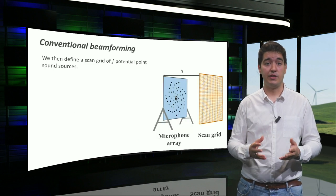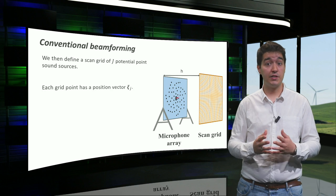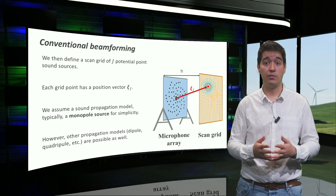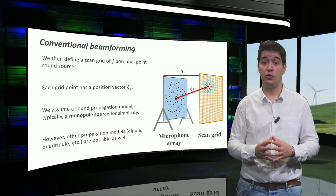We then define a scan grid of potential sound sources. Each grid point has a position vector, and we assume a sound propagation model, normally a monopole, but not necessarily.